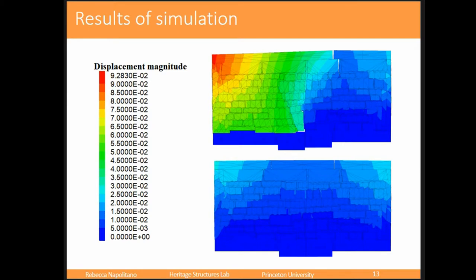Normally, what you get out of distinct element modeling is a rainbow plot of displacement magnitudes — red blocks moved the most, blue blocks didn't move at all. When comparing simulations you use these plots for a qualitative assessment. Under the settlement case, because the left side is further down, I have movement on the left side, which makes sense. Without settlement I don't have as much movement, but I do still see some kinds of displacement occurring.